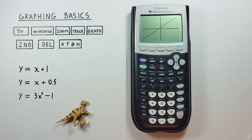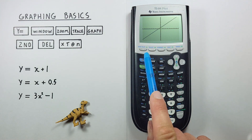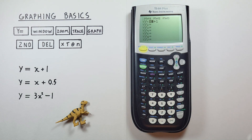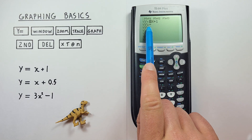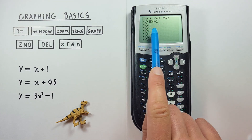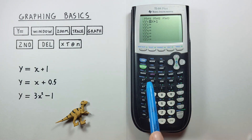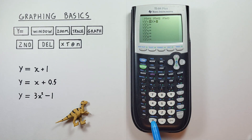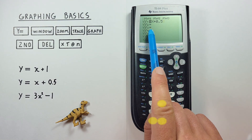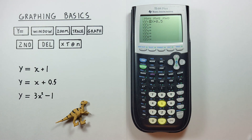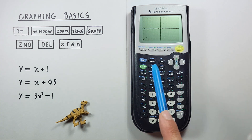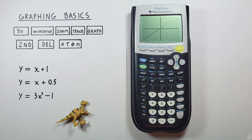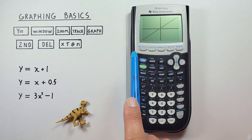Let's edit our function. We go back to Y=, and let's change this x plus one to x plus 0.5. We move our cursor over and enter 0.5 over top of the one and hit enter. Again, we can view the graph with the graph key.